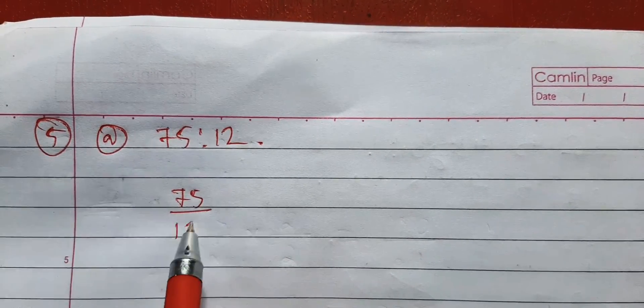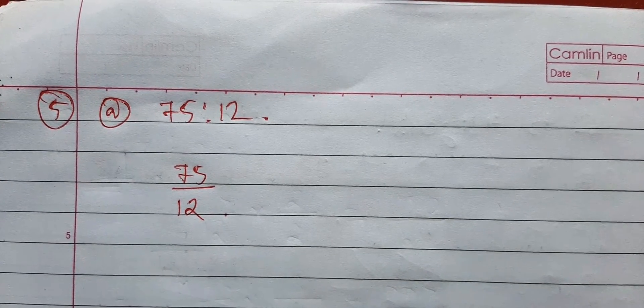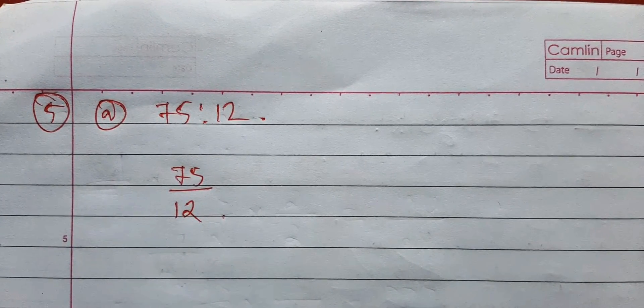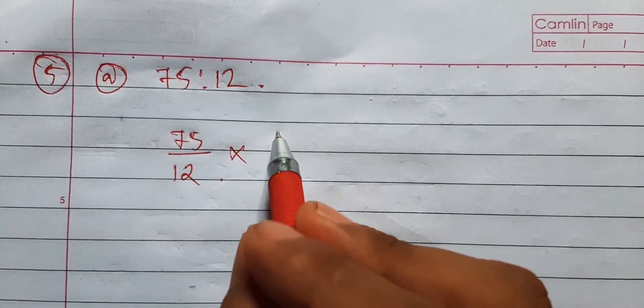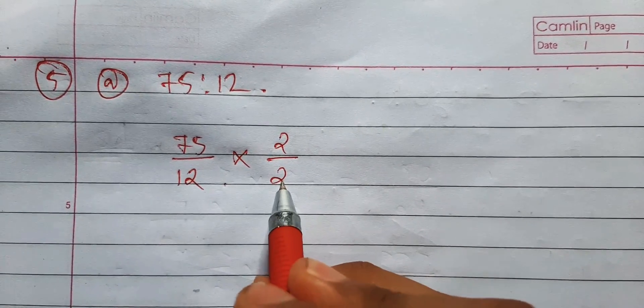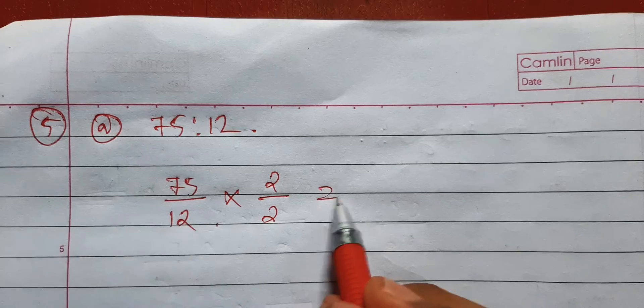75 is to 12. So when you're going to find the equivalent ratio, you can either divide or multiply. Here I'll be multiplying. If you're taking 2 here, you must take 2 here. The numerator and the denominator should be the same. You can take any number.